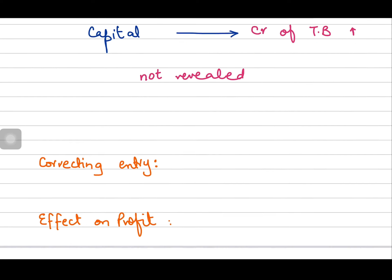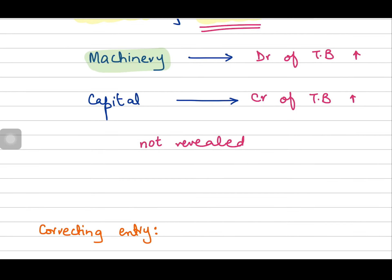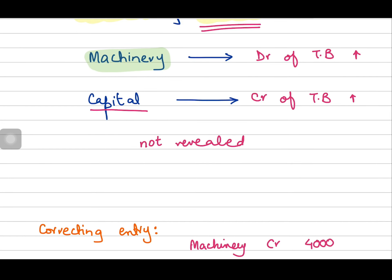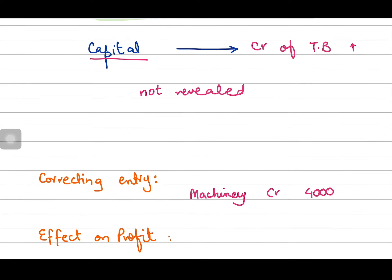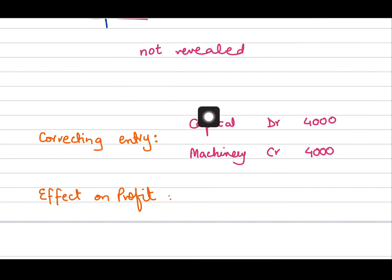Since we have now come to know about this error, we have to correct it. Machinery is overstated by four thousand dollars, meaning more has been recorded on the debit side of the machinery account. To decrease its balance, we will credit the machinery account by four thousand dollars so it returns to its original value. Capital is also overstated, meaning more has been recorded on the credit side, so to decrease its value we will debit the capital account by four thousand dollars as well.